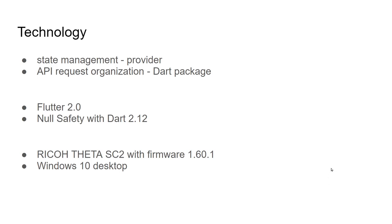As the number of buttons on the mobile app increases and the number of screens to display data grows, the state of the application becomes increasingly more difficult to manage. For this build, the state management provider package will be used to manage state — getting information from button presses to the camera and back to the screen. Another problem is that with such a large number of options and buttons, organizing the API requests to the camera is also quite difficult.